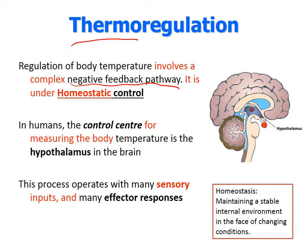The control center for measuring body temperature is the hypothalamus, this section of the brain, and this process operates with many inputs and outputs for effector responses. To maintain temperature we have many different effector responses available. Homeostasis is the stable internal environment maintained in the face of changing conditions in the external environment.